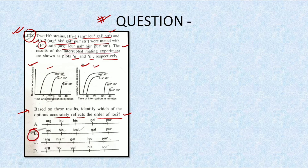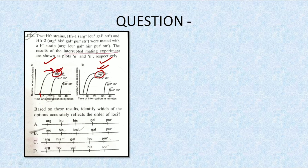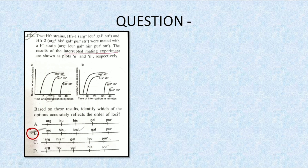We need not have a deeper understanding of the interrupted mating experiment — all we need is the trick to solve these questions. The question appears very difficult initially, but once you know the trick it is very simple. Just analyze the two graphs, find out at which time each strain occurs, and plot the order based on the overlapping information. This question is very easy and you can easily fetch four golden marks from it.